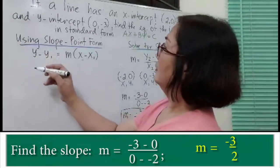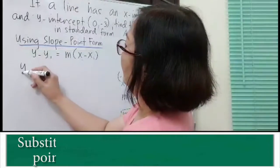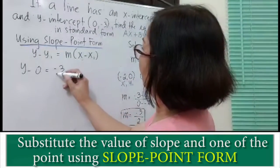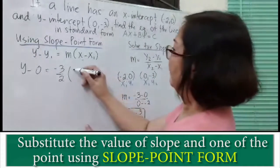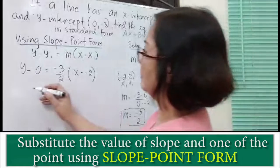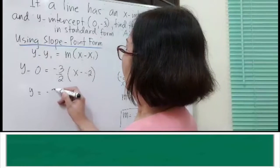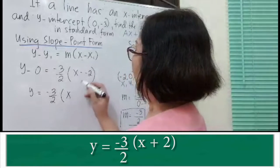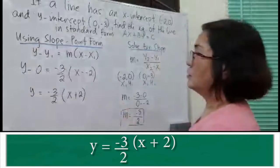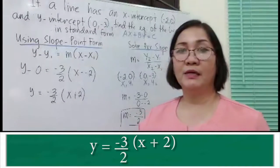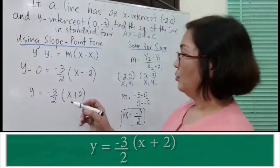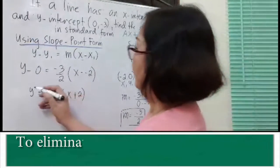Now substitute the slope into the slope-point form. We have y minus y sub 1, which is 0, equals m which is negative 3 over 2, times x minus x sub 1 which is negative 2. Simplifying: y equals negative 3 over 2 times x, and negative times negative 2 becomes positive 2. Since we have a denominator, multiply all terms by 2 to eliminate the denominator.